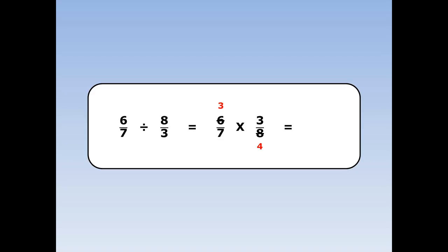Then we continue as normal — 3 times 3 is 9, and 7 times 4 is 28.